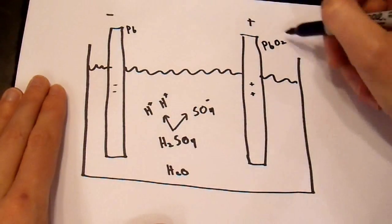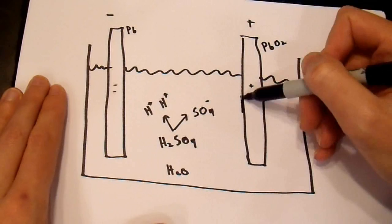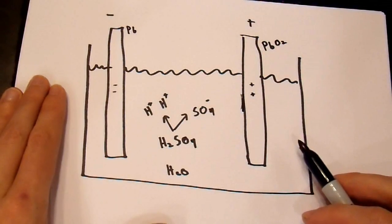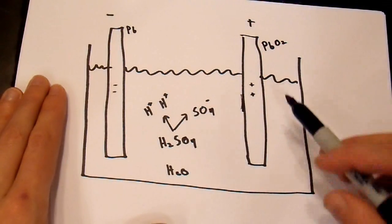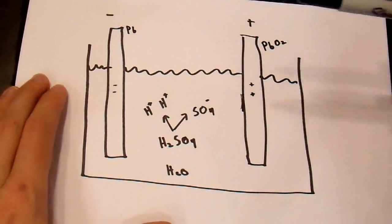These pluses react with the lead dioxide. It steals two electrons and deposits them in a layer of sulfate on the positive terminal. And, this is now left with not enough electrons.